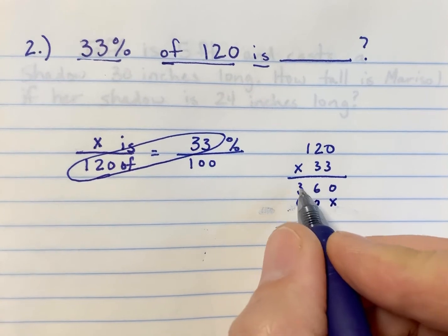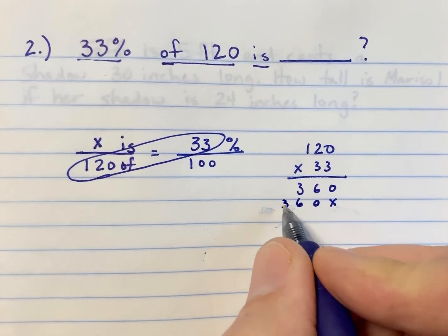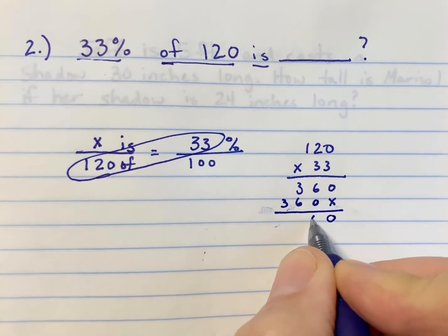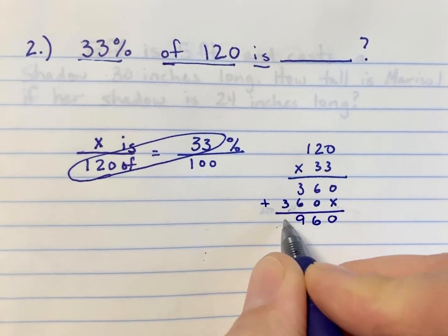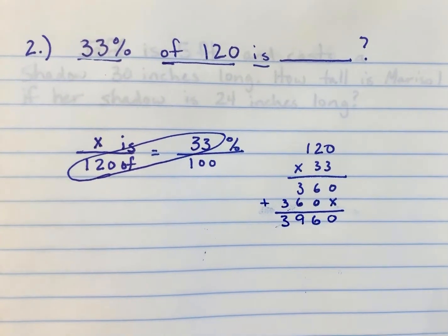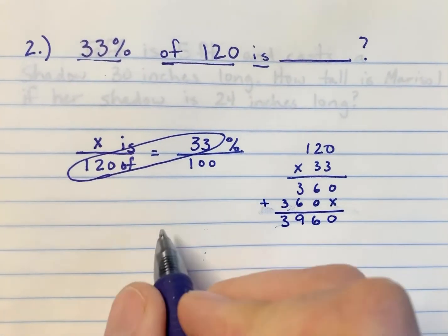So, I'm going to get a 0, 6, and a 3. Add these up, and we get 3,960. I cross multiplied. Now, I need to divide.